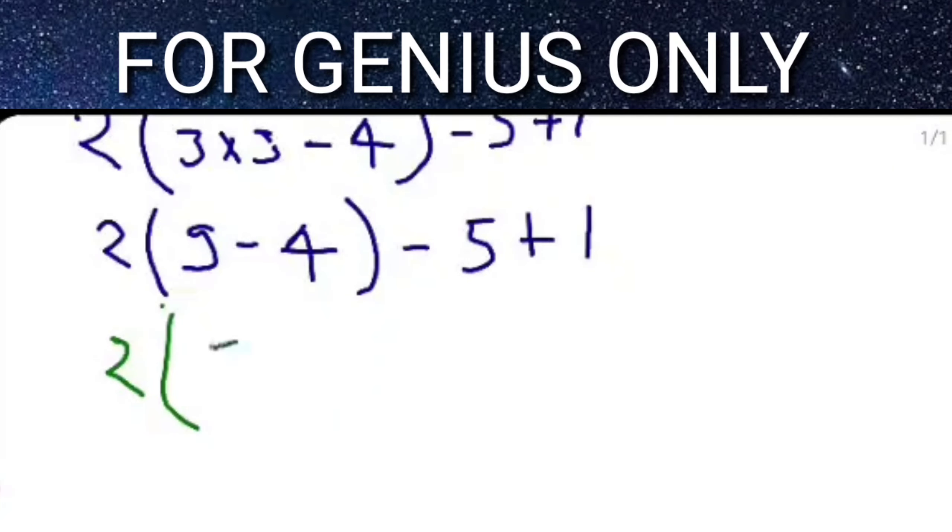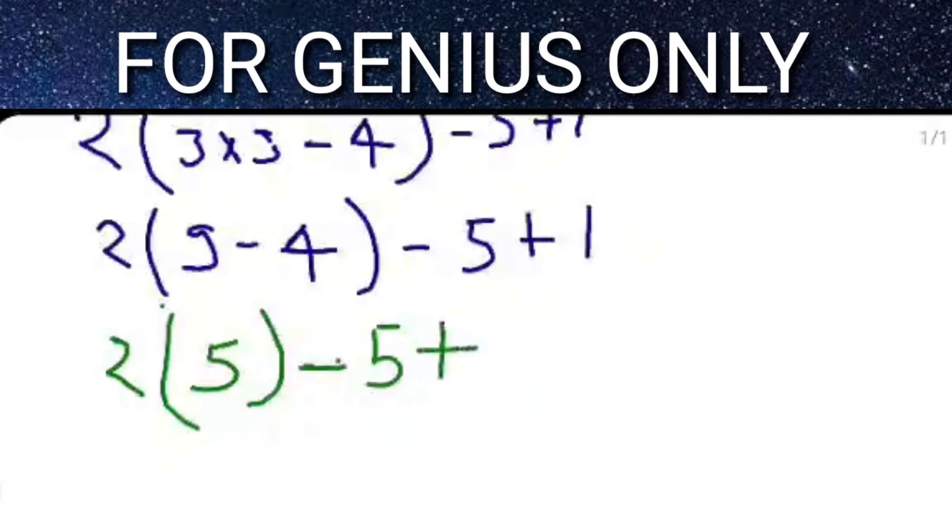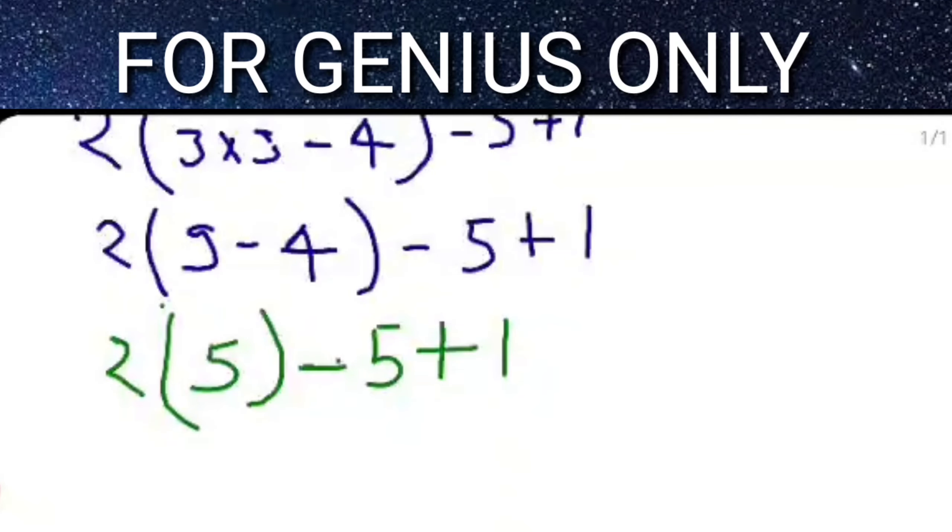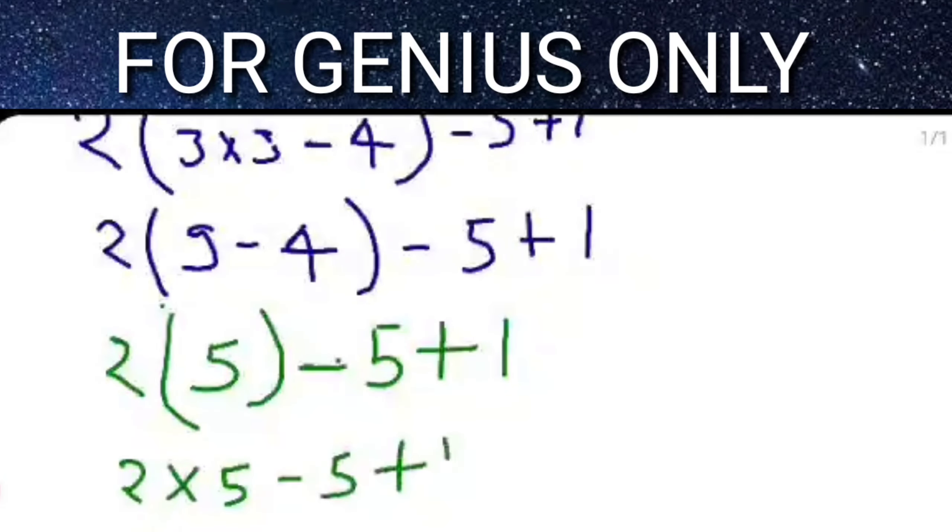And after that, 9 minus 4 is equal to 5, close bracket, minus 5 plus 1. Then 2 multiply 5 minus 5 plus 1.